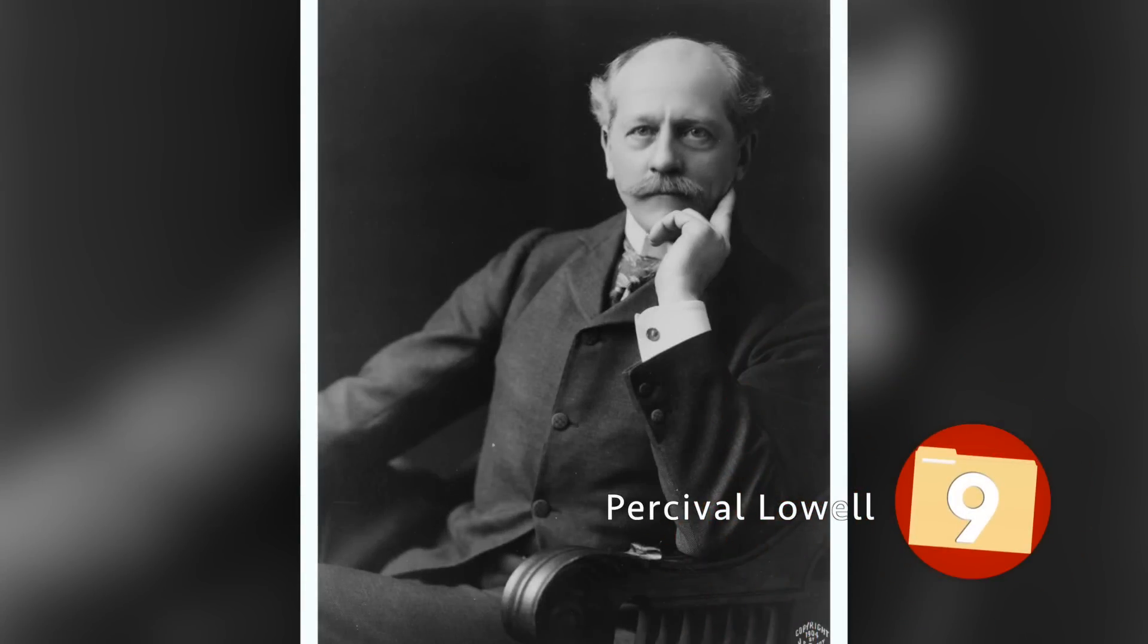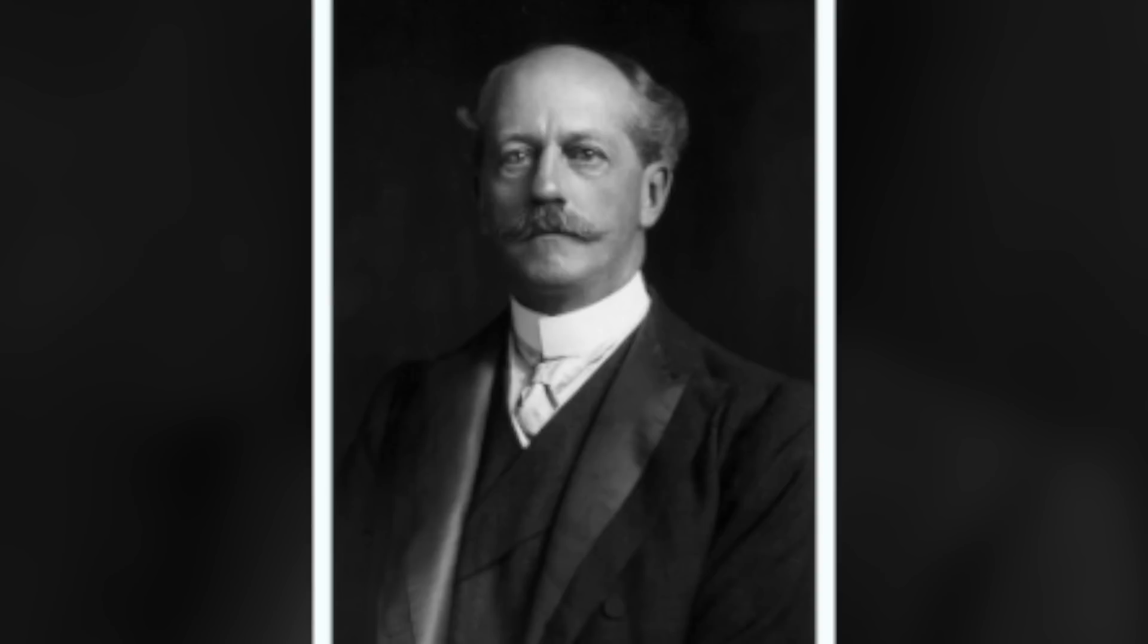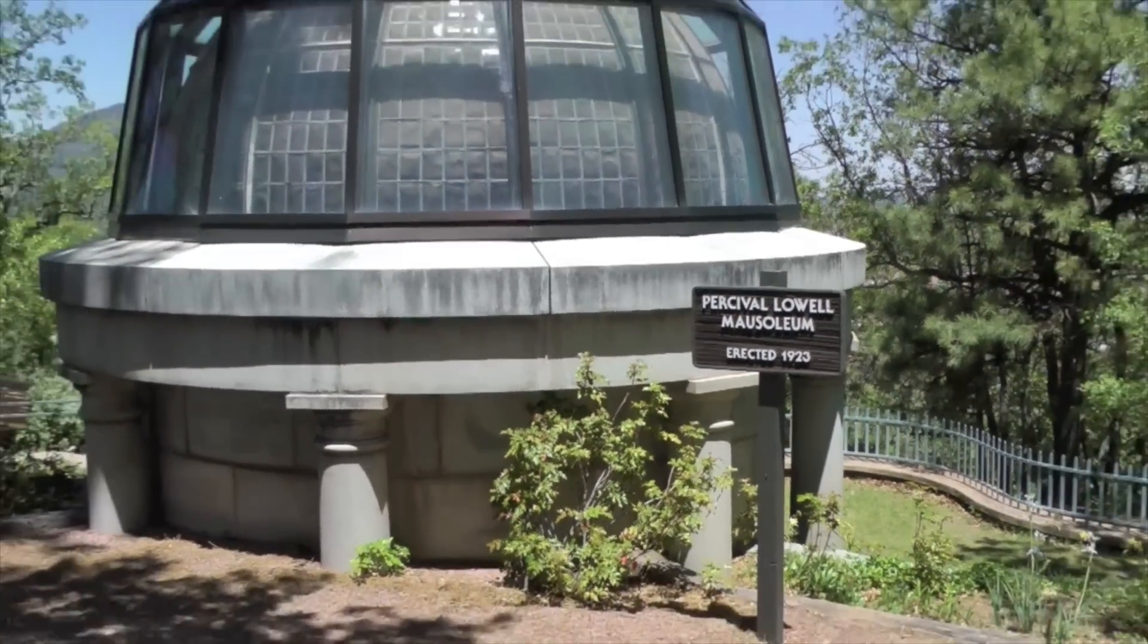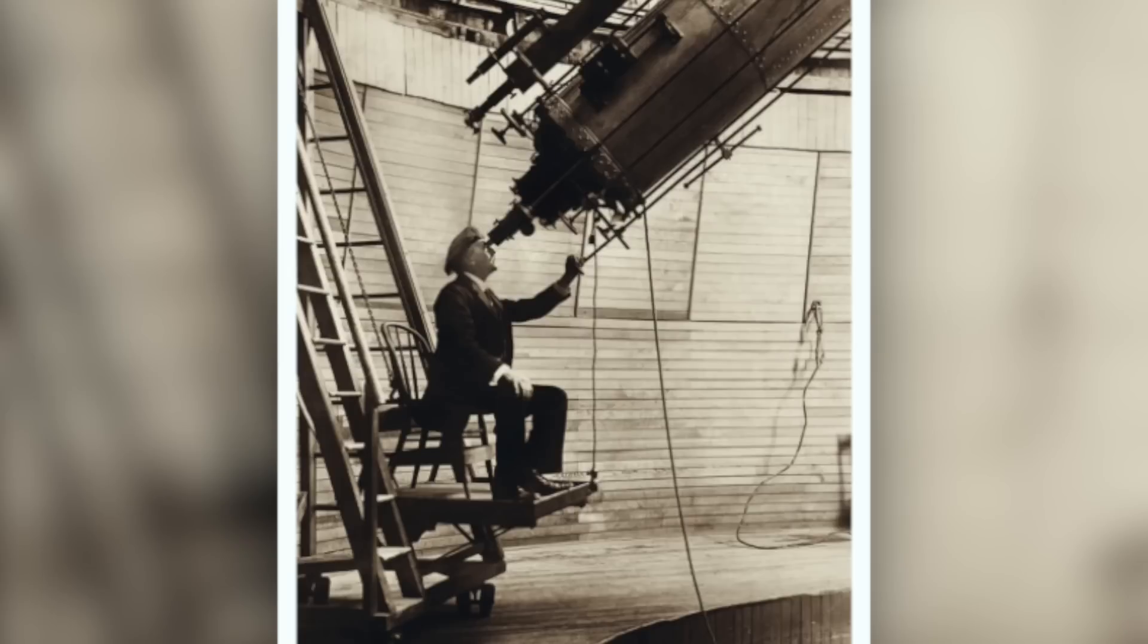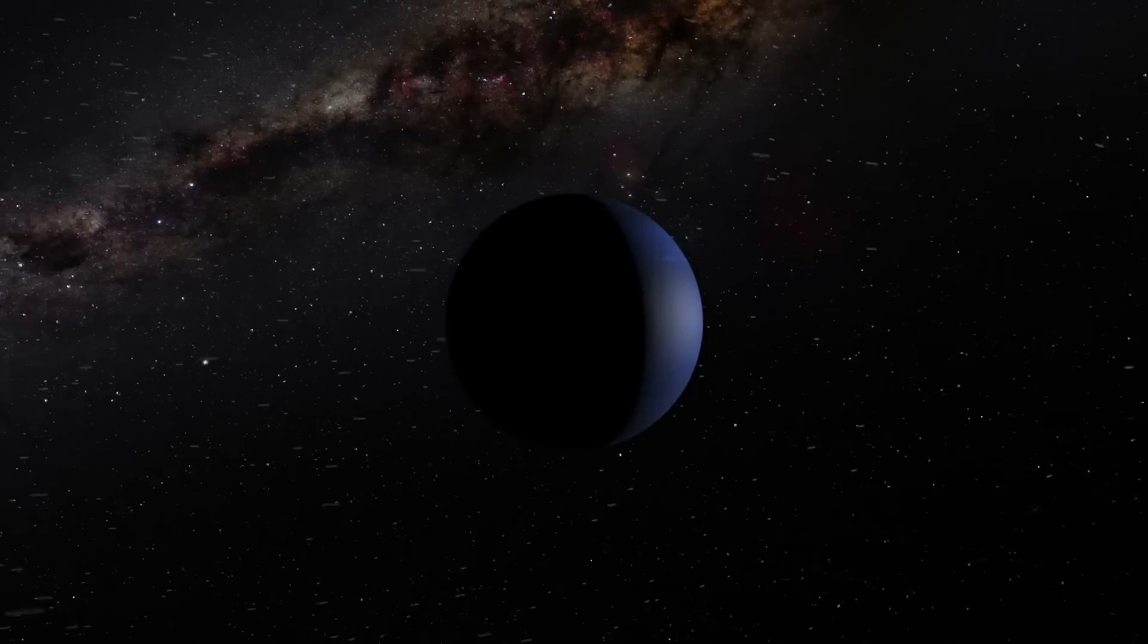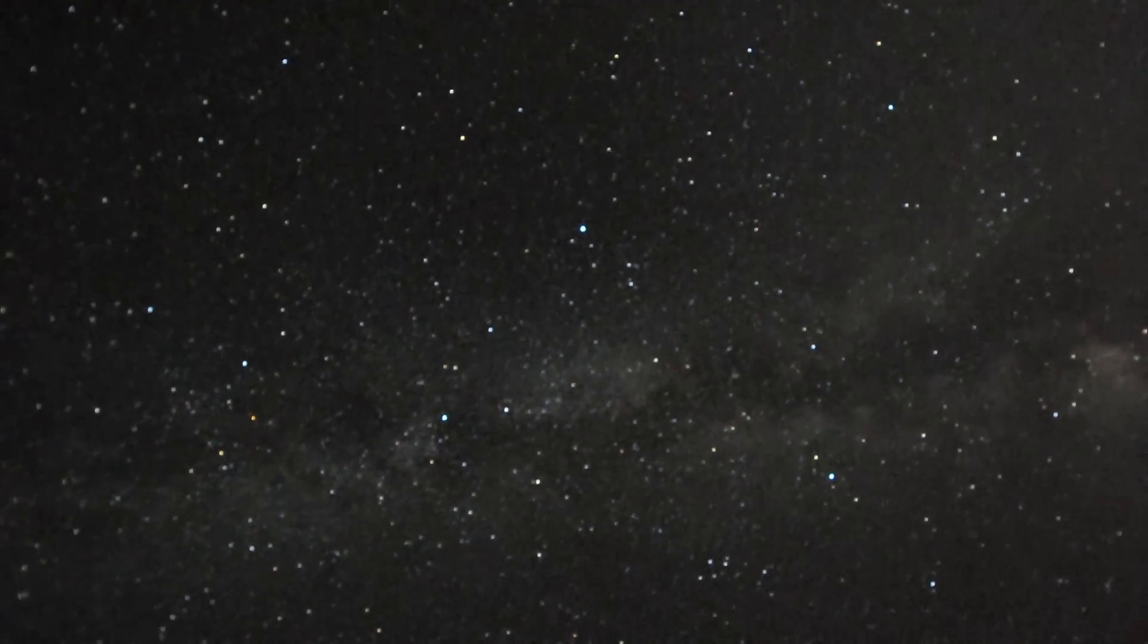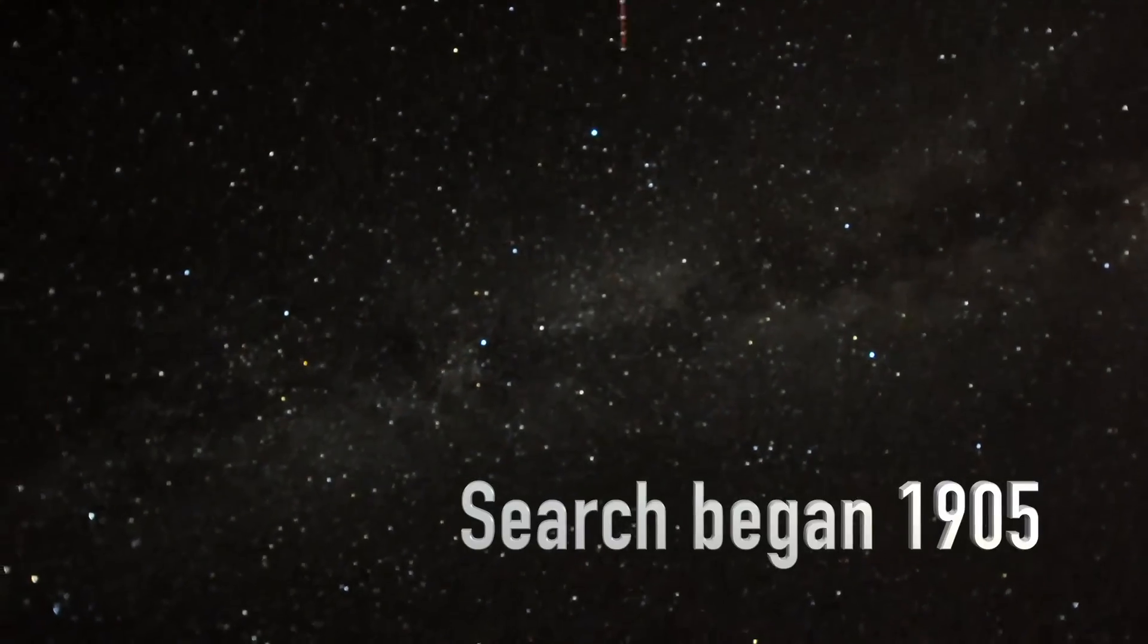Percival Lowell. Though Clyde may have been credited with discovering Pluto, the search may not have occurred had Percival Lowell not been around. Percival had died prior to Pluto's discovery, but he had conducted several searches that helped narrow down its location. After the discovery of Neptune, astronomers still believed a ninth planet existed based on irregularities found within the orbit of Uranus.